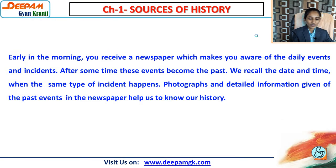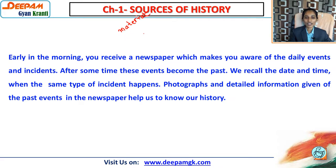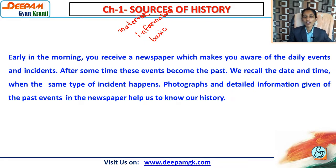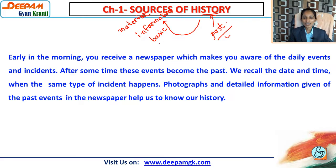As the name of the chapter suggests, sources means materials from which we are getting information. If we are getting any information from materials, that is called sources — or we can say basic things from which we are getting the information. And which kind of information do we have to get? We have to get information about history. History means the past — whatever things had already happened, we find them out with the help of materials.